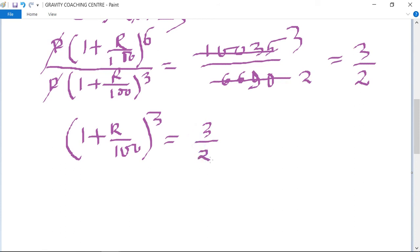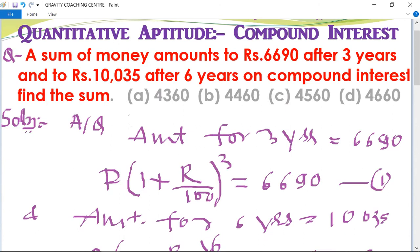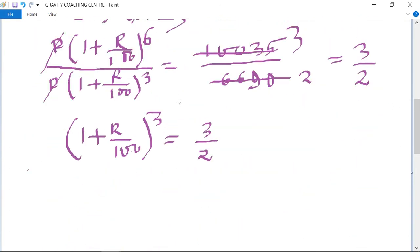From equation 1, we get P into the value of this part, 3 upon 2, equals 6690.